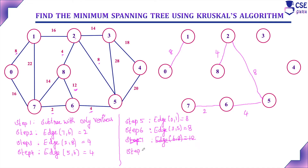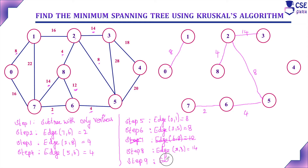Step 8: the next minimum cost edges are 7,8 with cost 14 and 2,3 with cost 14. Two edges are available. In order, we include edge 2,3 with cost 14. Next, we consider edge 7,8 with cost 14 — including it would form a cycle, so we do not include this edge.